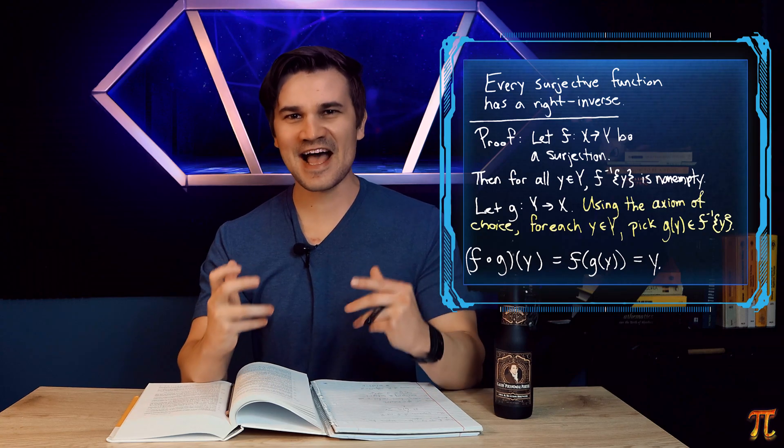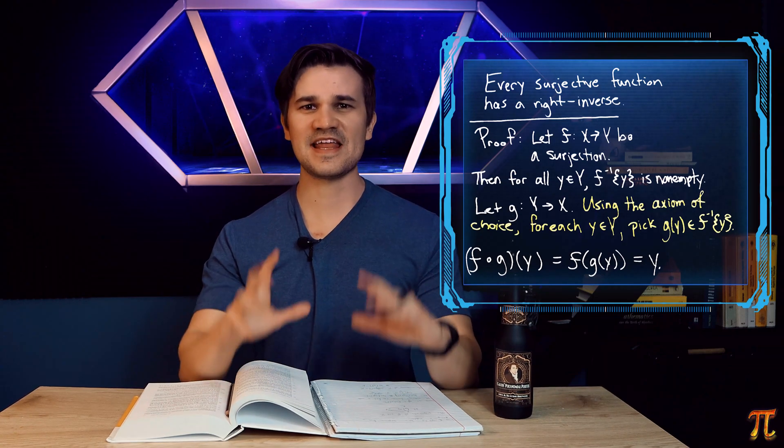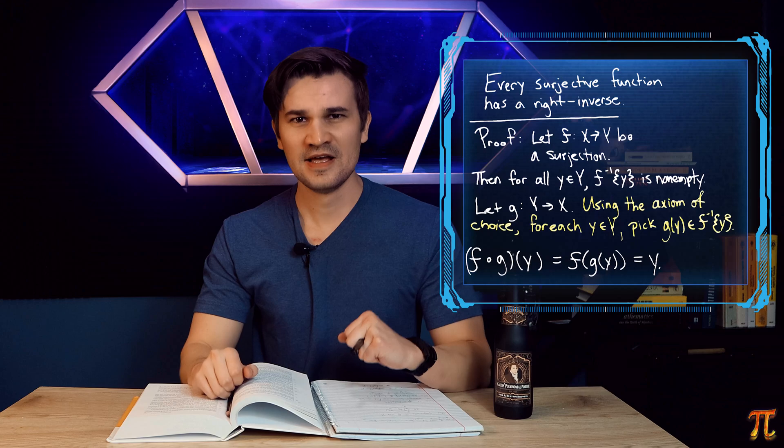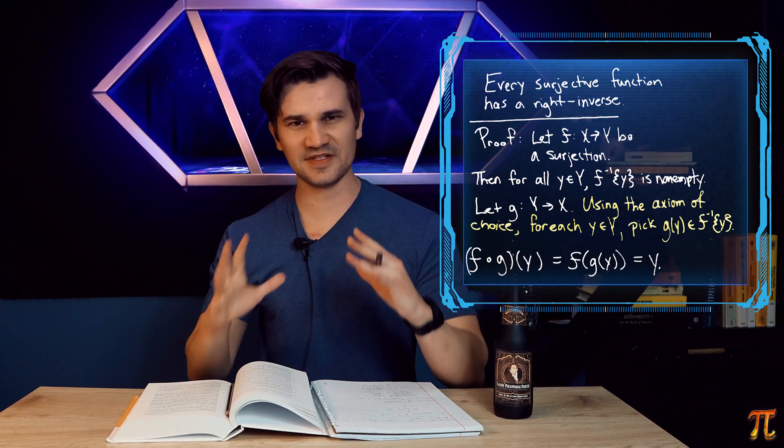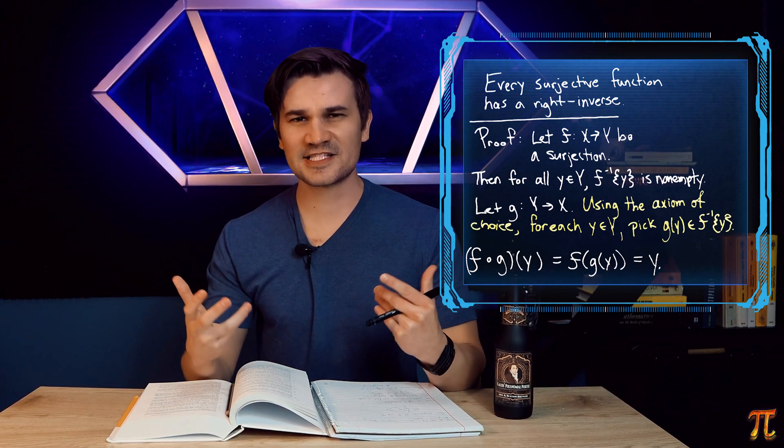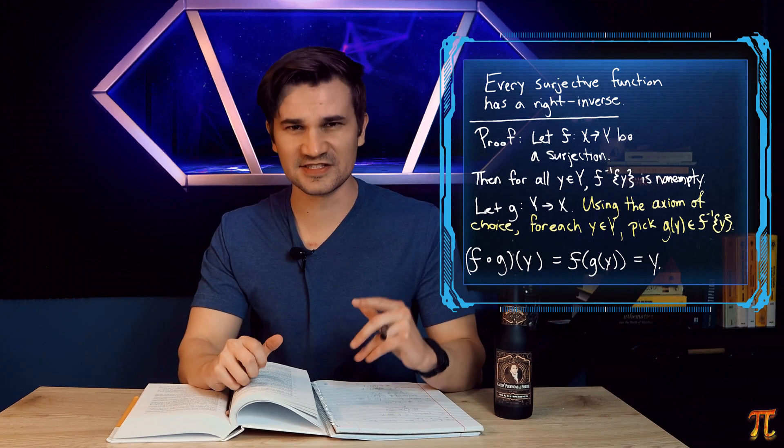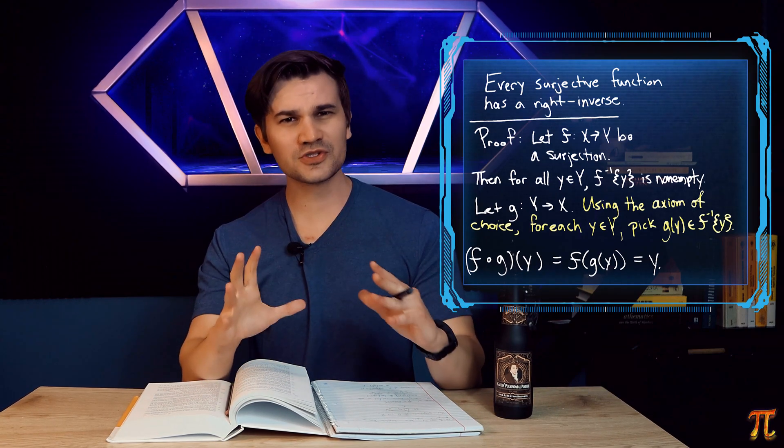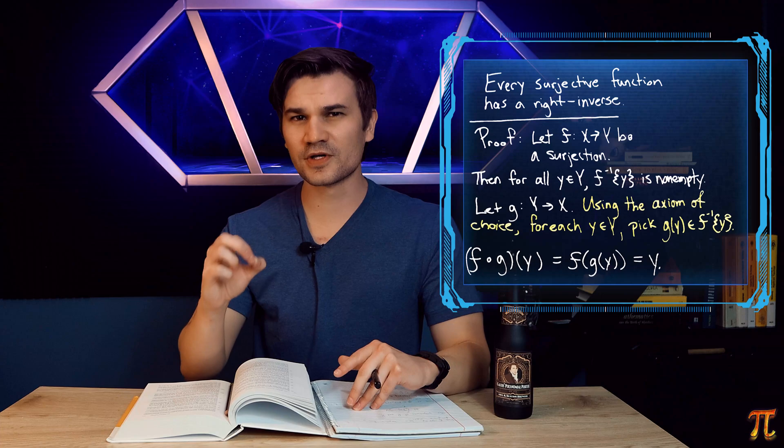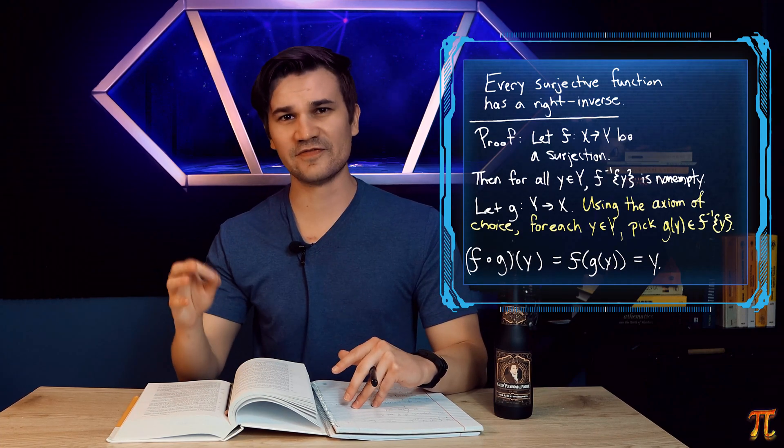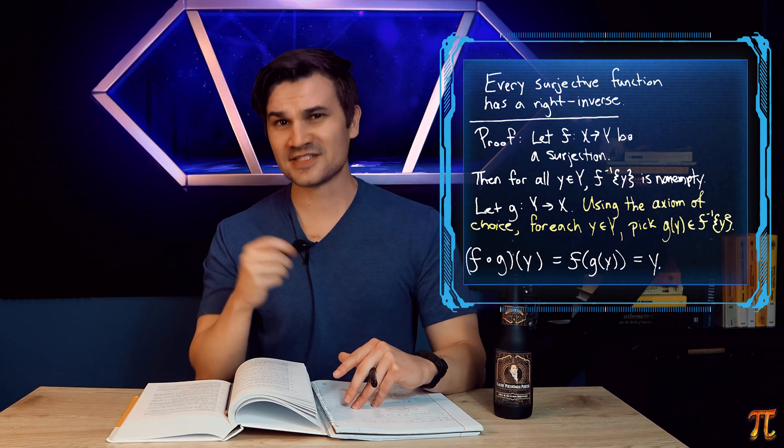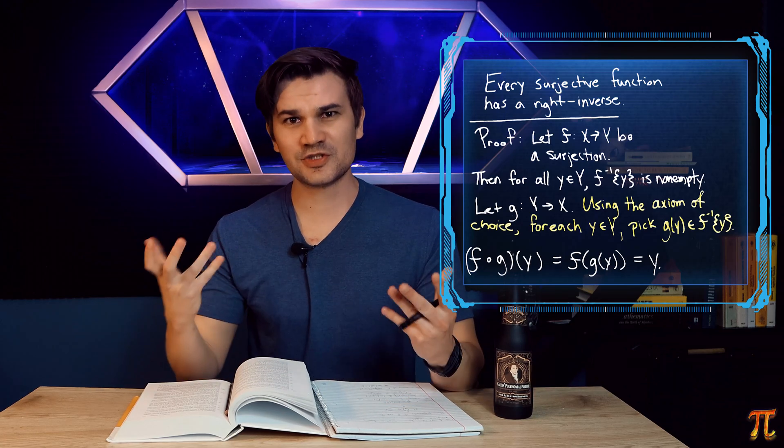You may recall hearing at some point that the axiom of choice is equivalent to the statement that every set can be well-ordered. This example actually gives a nice view into that. In our proof, I used the axiom of choice to directly show the existence of the right inverse. But I could have also used the axiom of choice to put a well-order on x, and then construct the right inverse based on that by selecting the least element of each preimage.